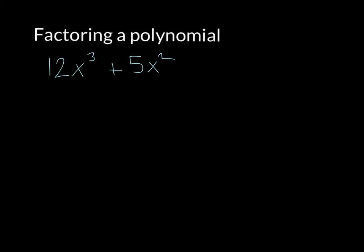So the steps for factoring a polynomial are: first, look at the constants and find the greatest common factor between the constants. Second, look at the variables and factor out the highest power of variables you can. And if you have multiple variables, you do that for each variable.